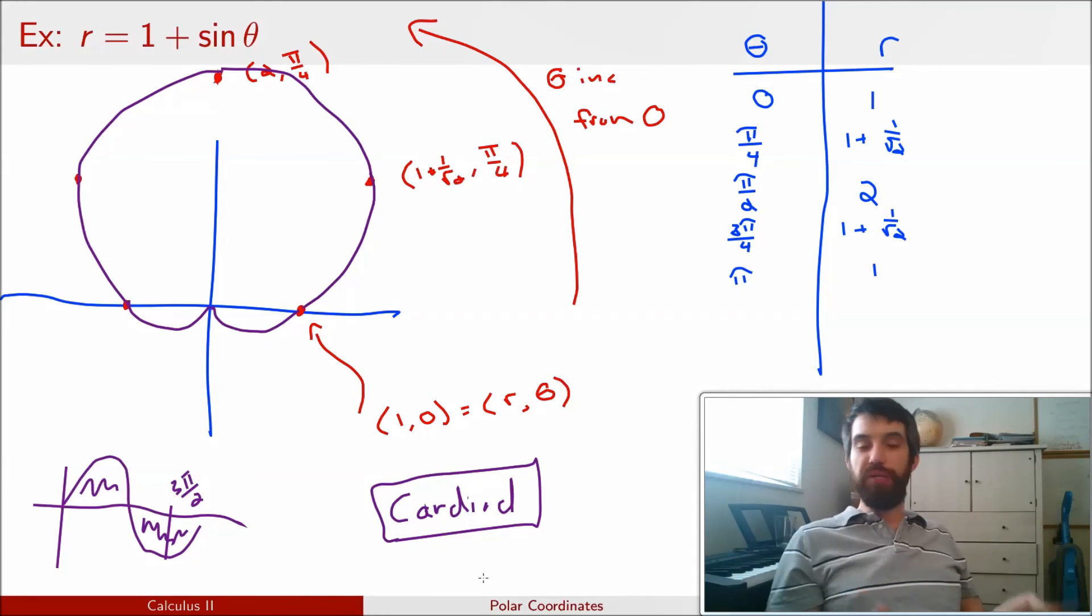So my basic approach to sketching any of these polar curves is to think about if I start at theta equal to 0. As my theta goes around, what happens to my r value? Does it get bigger? Does it get smaller? And then I can just sketch, letting my theta values rotate around and then setting the r value to be whatever it's supposed to be.